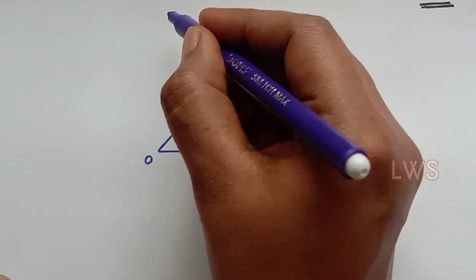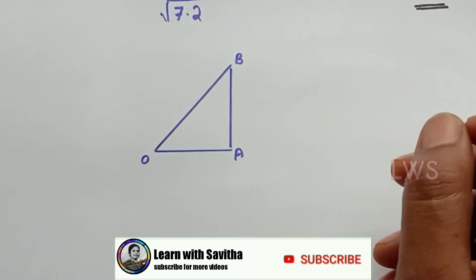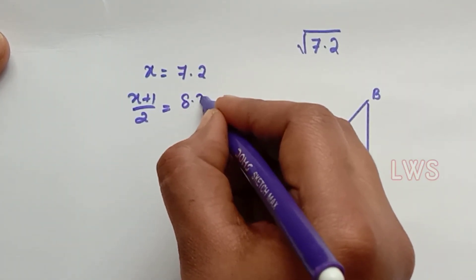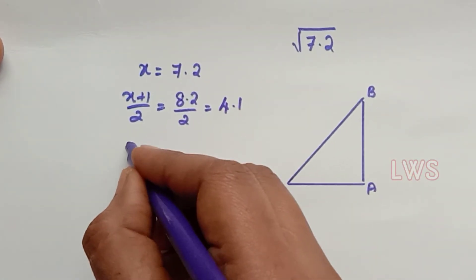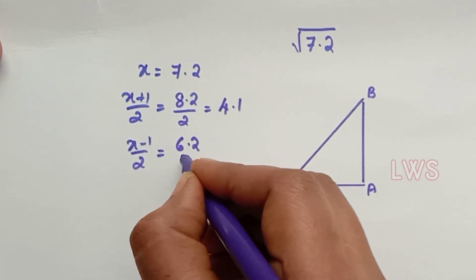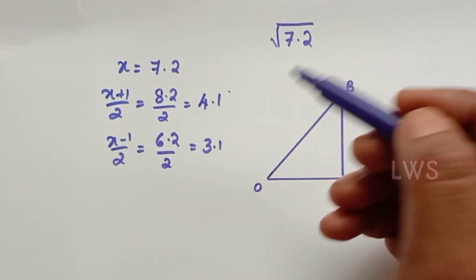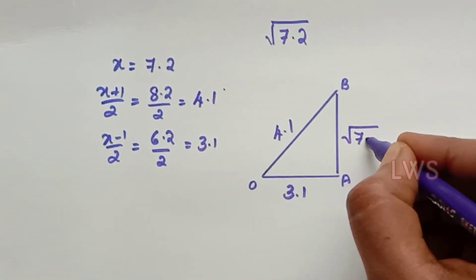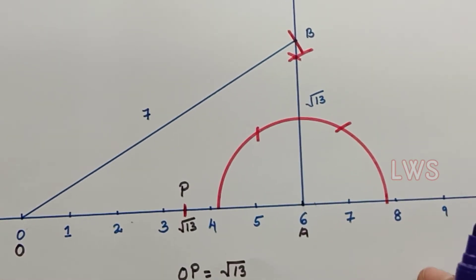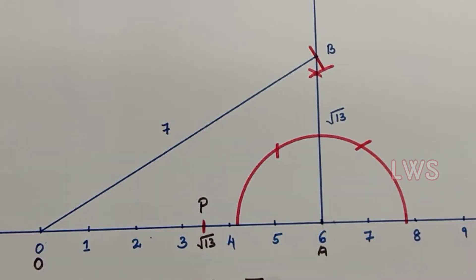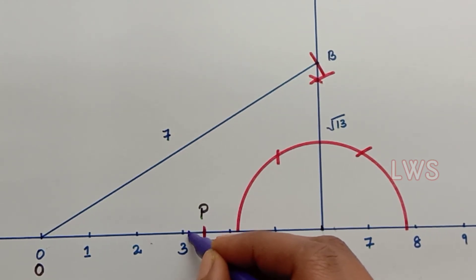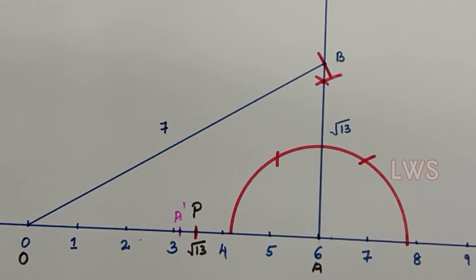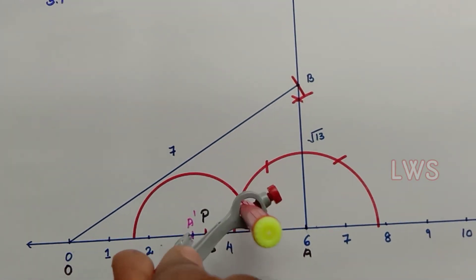Next, on the same number line, we are going to represent the square root of the decimal number 7.2. Here x equals 7.2, so x plus 1 by 2 equals 4.1 and x minus 1 by 2 equals 3.1. We have to construct a right triangle with 3.1 as the base and 4.1 as the hypotenuse, so that the altitude is of length square root of 7.2. This is the point 3.1 — we mark it as A'. Now we construct a perpendicular at the point A'.